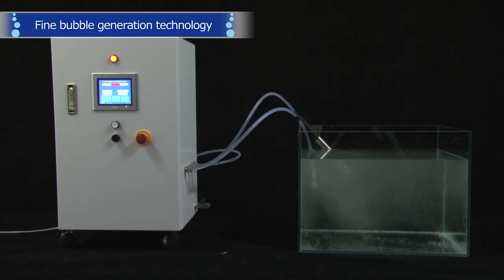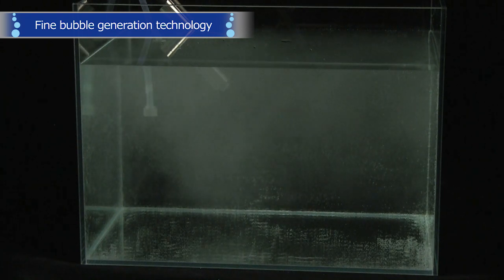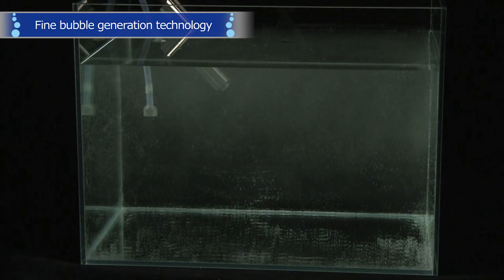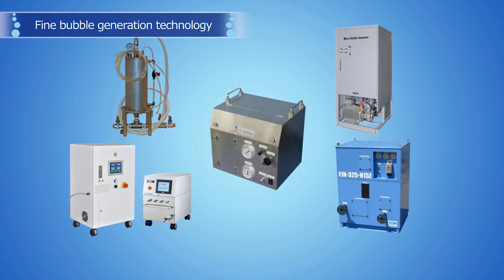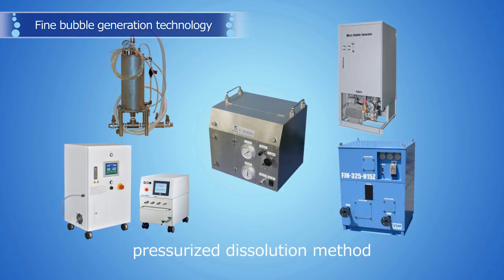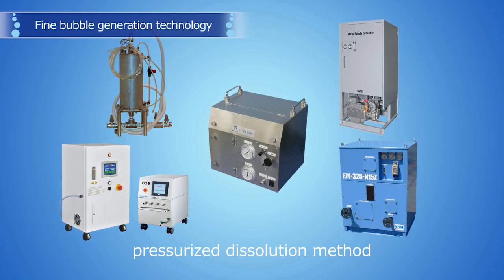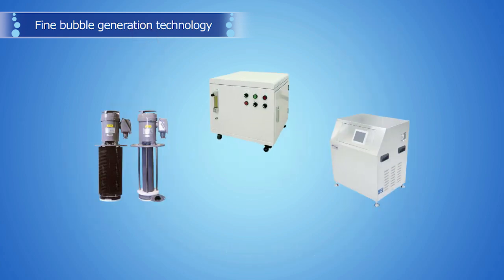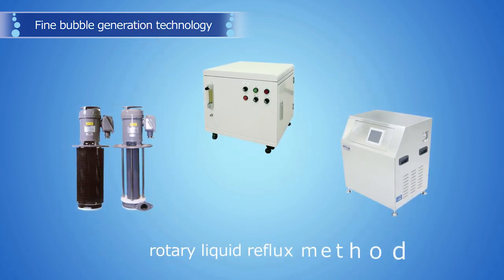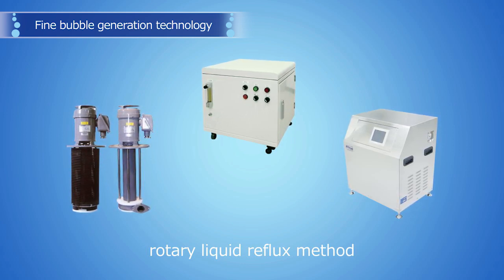The fine bubble generation technologies led by Japanese industries and academia are developing rapidly. In the pressurized dissolution method, liquid and gas are mixed under high pressure so as to have gas dissolved into the liquid. The quick pressure drop prevents the gas from remaining dissolved and results in ultra-fine bubbles. In another method known as the rotary liquid reflux method, gases are broken down into a number of fine bubbles by fast rotary reflux flow, and then the bubbles are separated by flotation.